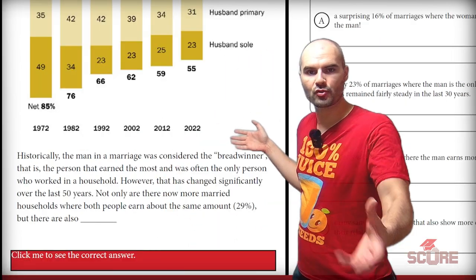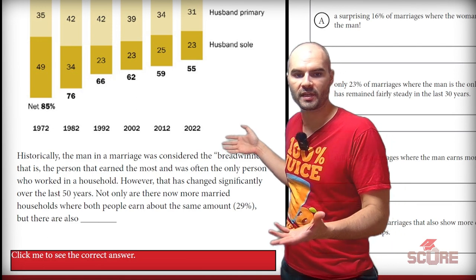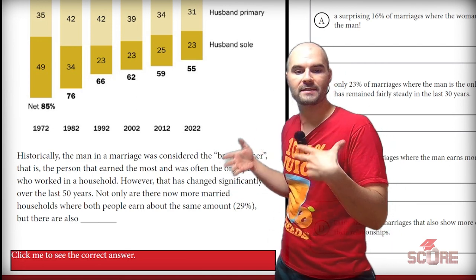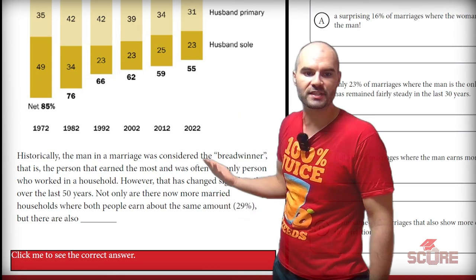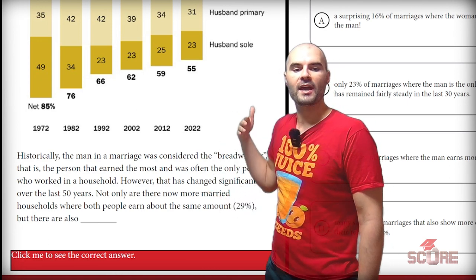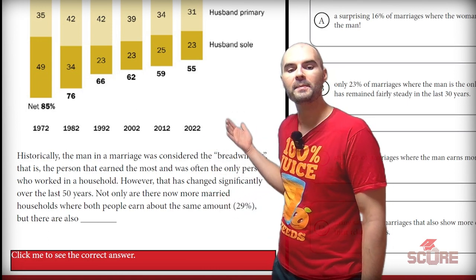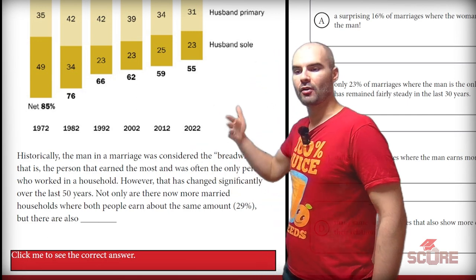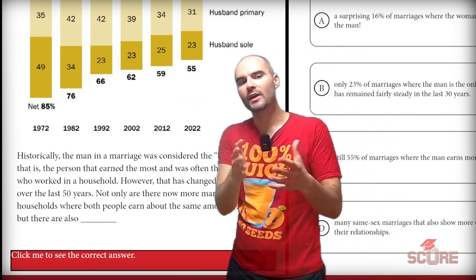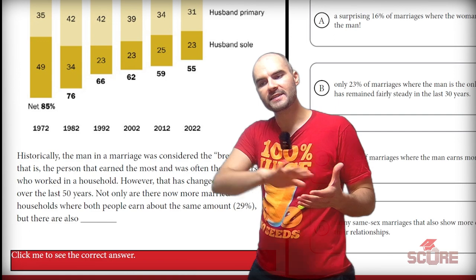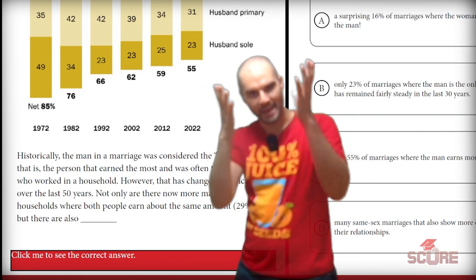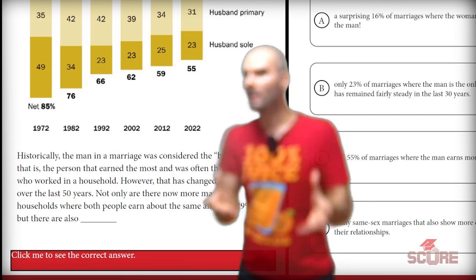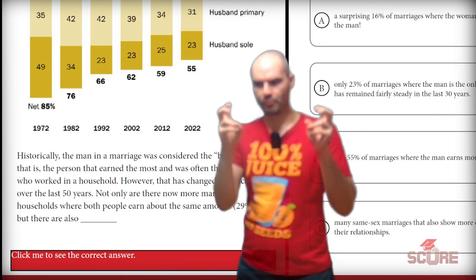In our second paragraph, it's really short so I'll just read the whole thing. It says historically the man in a marriage was considered the breadwinner — the person that earned the most. That has changed significantly over the last 50 years. Now there are more married households where both people earn about the same amount, 29%. What I want to find is a trend toward more balanced marriages, or even the extreme fact that some women are actually the breadwinner now.